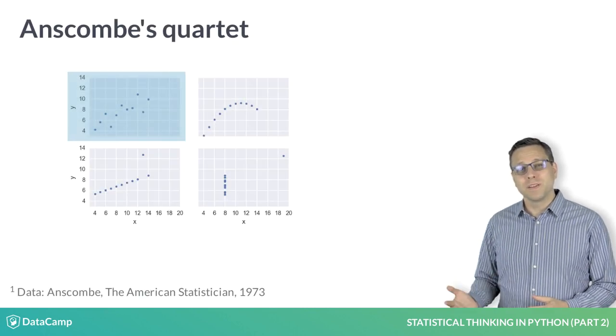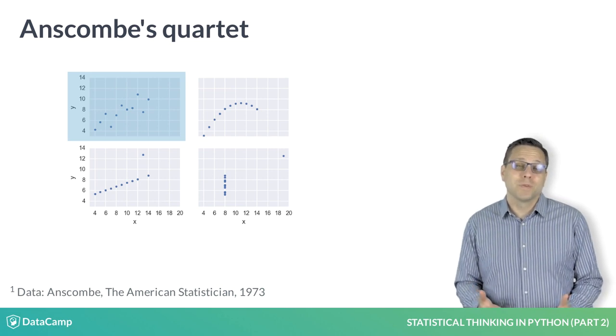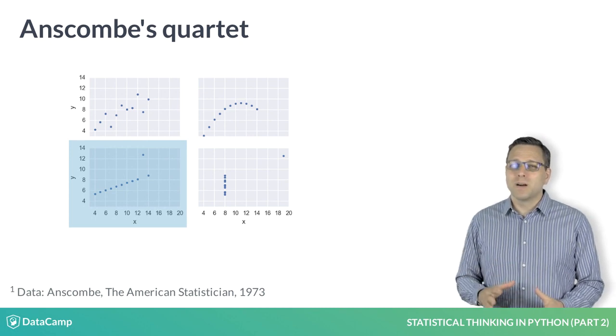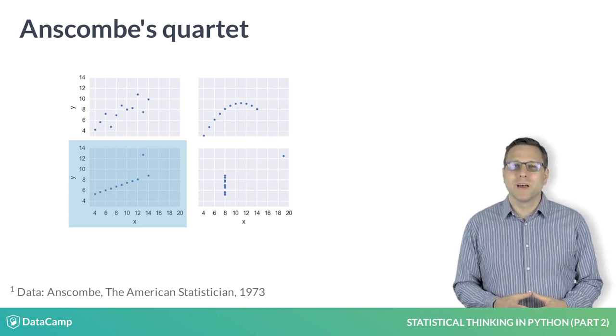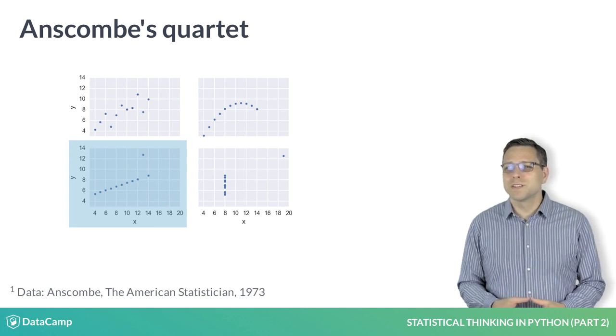For example, this data set might be well modeled by a line, and the regression parameters will be meaningful. The same is true of this data set, but the outlier throws off the slope and intercept. After doing EDA, you should look into what is causing that outlier.